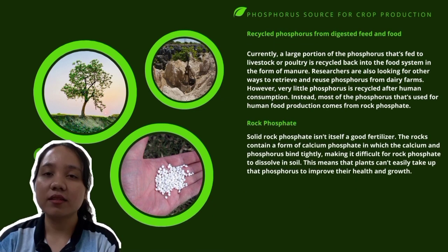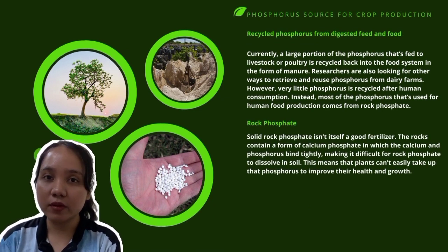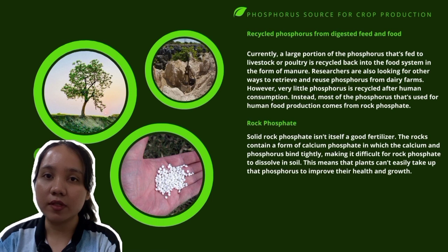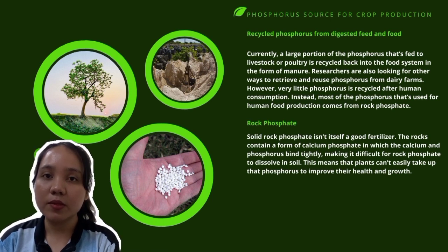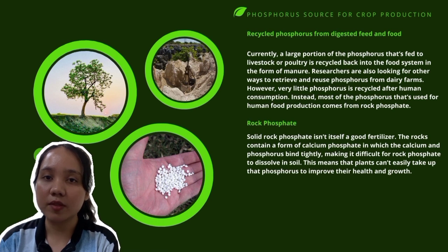The sources of phosphorus are from recycled phosphorus from digested feed and food, and from raw rock phosphate. A large portion of the phosphorus fed to livestock or poultry is recycled back into the food system in the form of manure. Researchers are also looking for other ways to retrieve and reuse phosphorus from dairy farms.